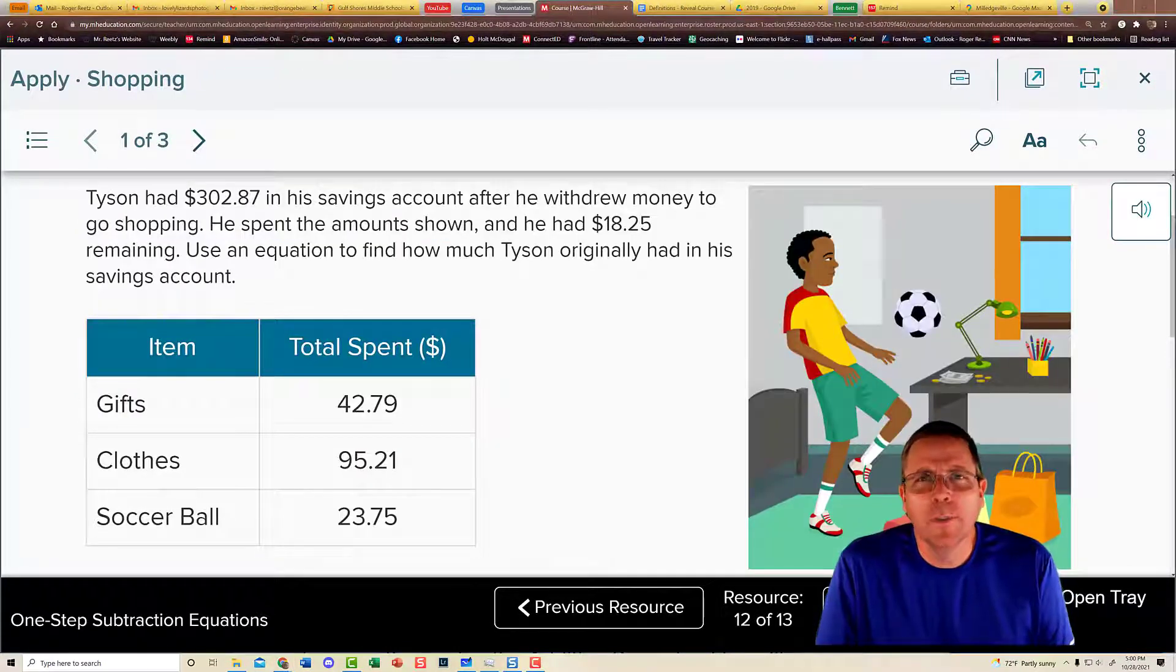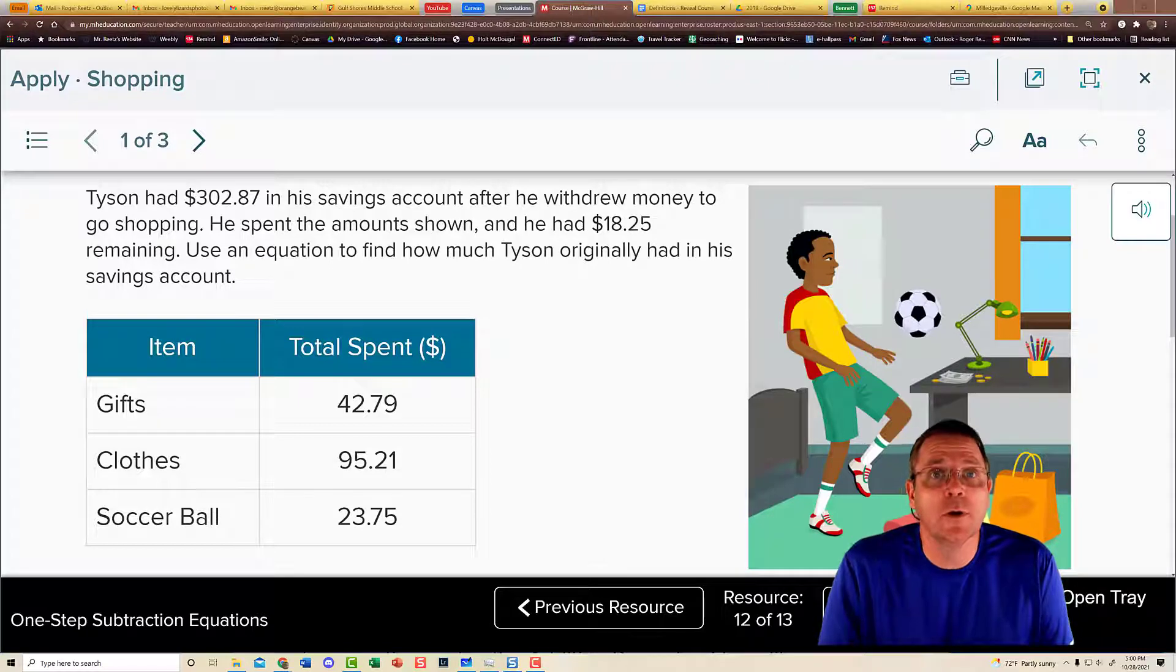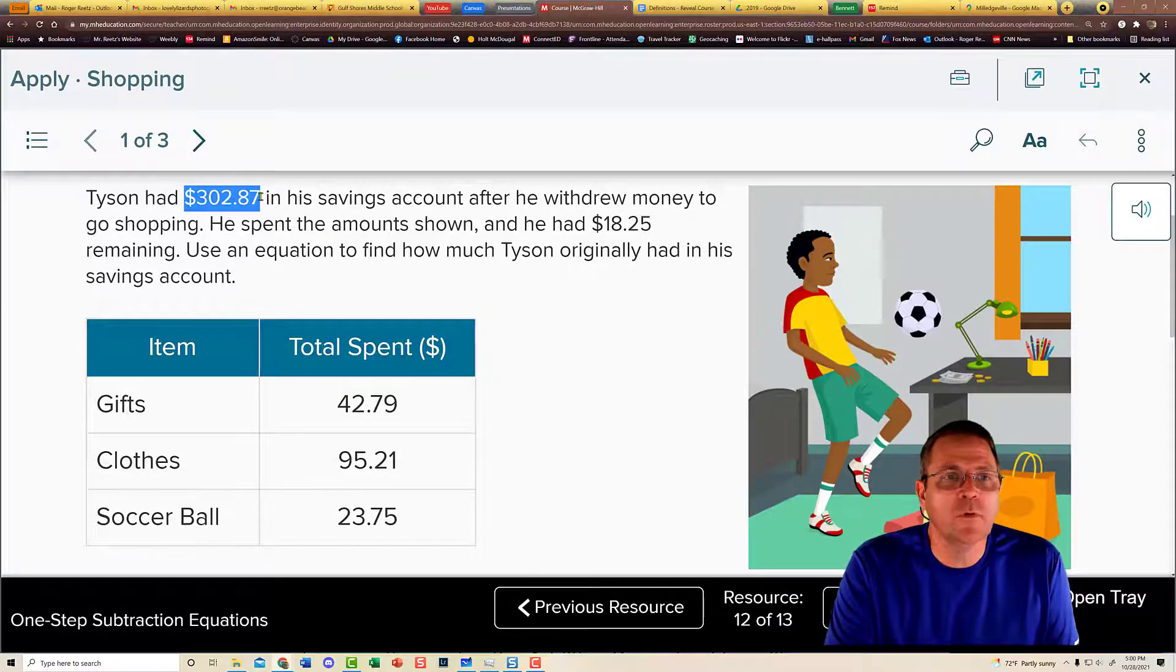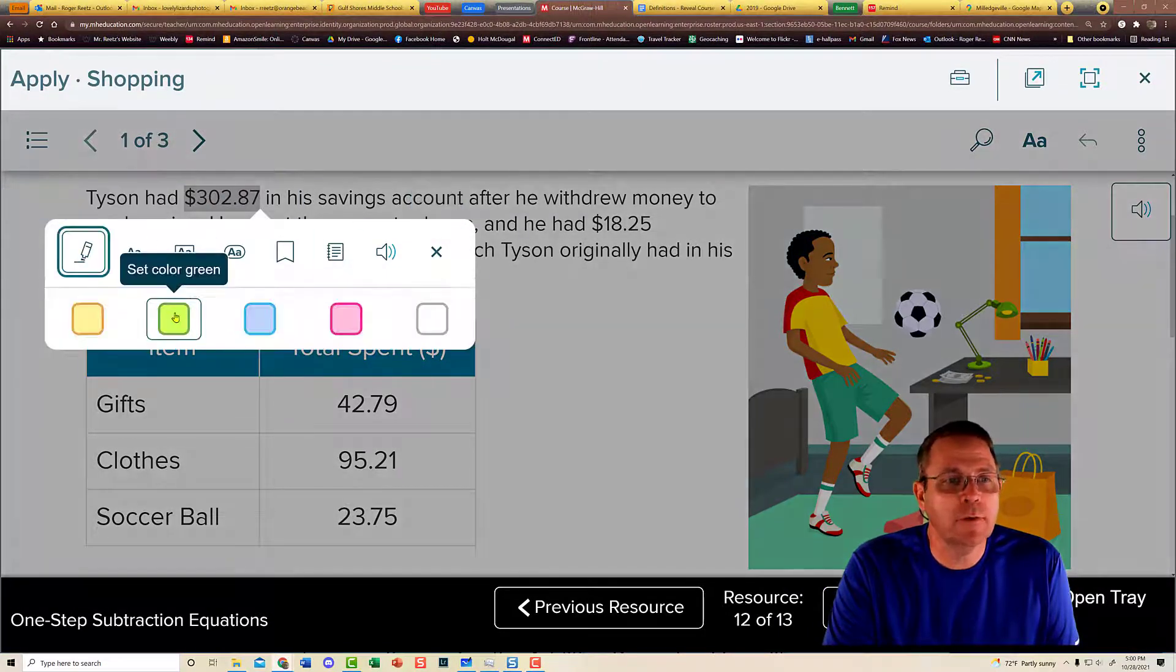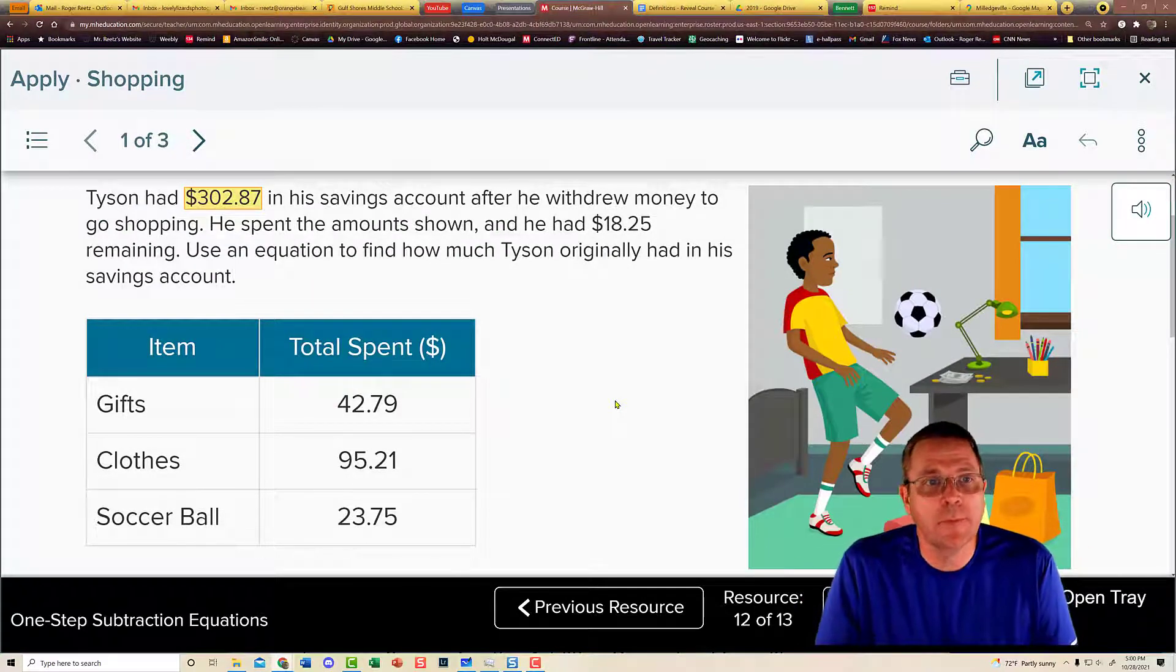Let's do one apply problem, then we'll call it quits. Tyson had $302.87 in a savings account after he withdrew money to go shopping. So this is what was left after he decided that he was going to go shopping. And he took out a chunk of money to go shopping.